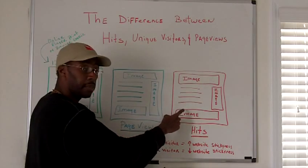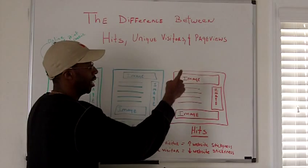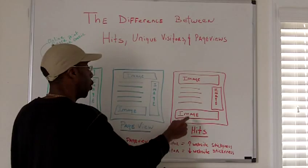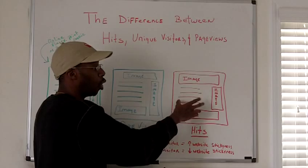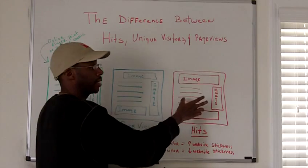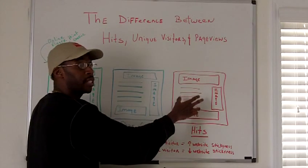So this image is a hit, this image is a hit, and the HTML page itself is a hit. So you have four hits on this page right here. When this is called by the web browser, it's actually four hits. You can see that it doesn't really tell you the flow of traffic you're getting.